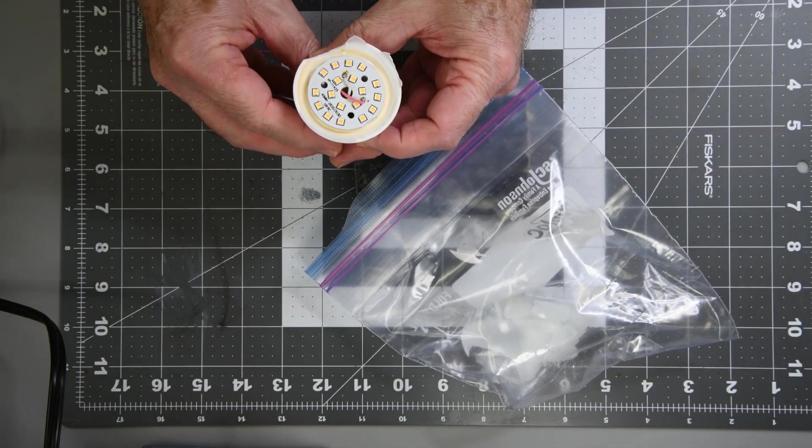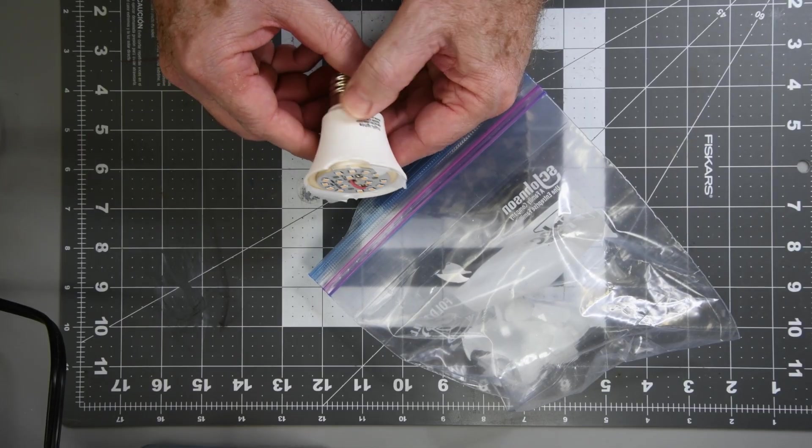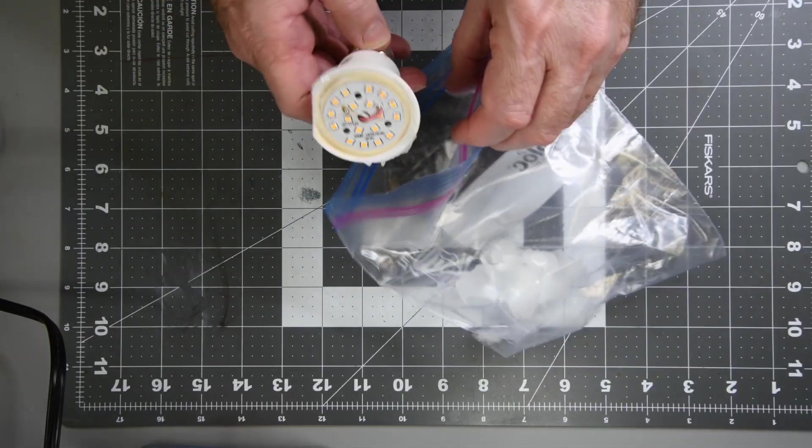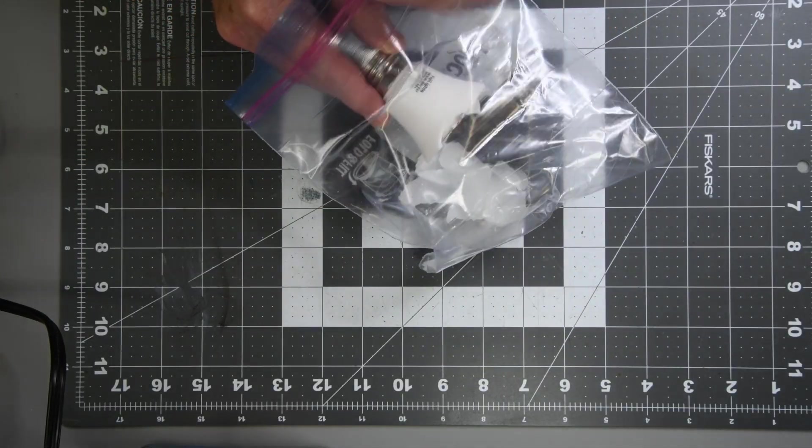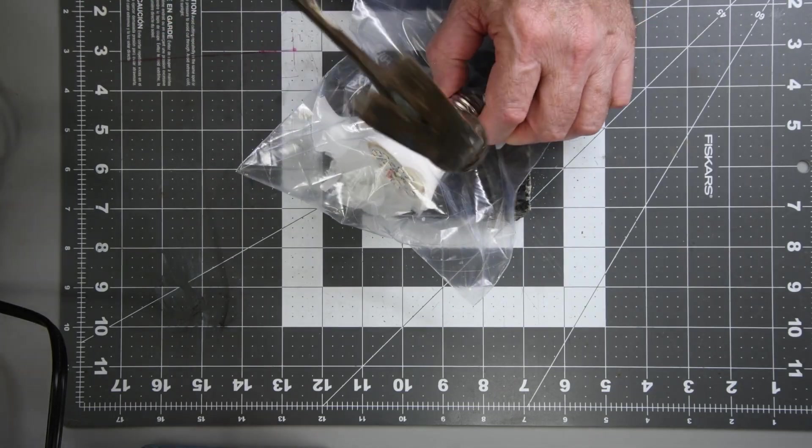Looks to be 18 LEDs. I would expect them to be in series at around 3 volts each. It'll be in the 50 to 60 volt range to run. The PCB is aluminum and it looks to be glued to the ceramic base with some silicone. Let me bang on it a bit more.